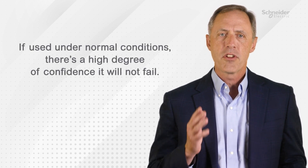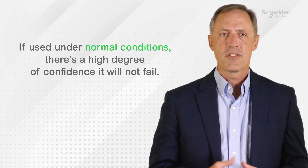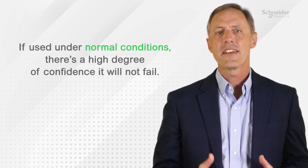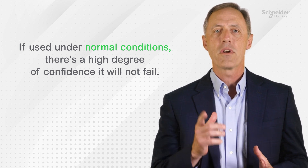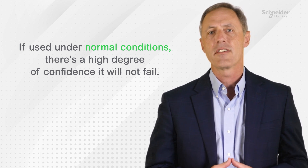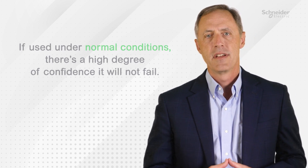What it really means is that if used under normal conditions, there is a high degree of confidence that the tire will not fail before it reaches 60,000 miles. That's not to say that random failures won't occur, but if you continue to use the tire beyond 60,000 miles, it may be okay.